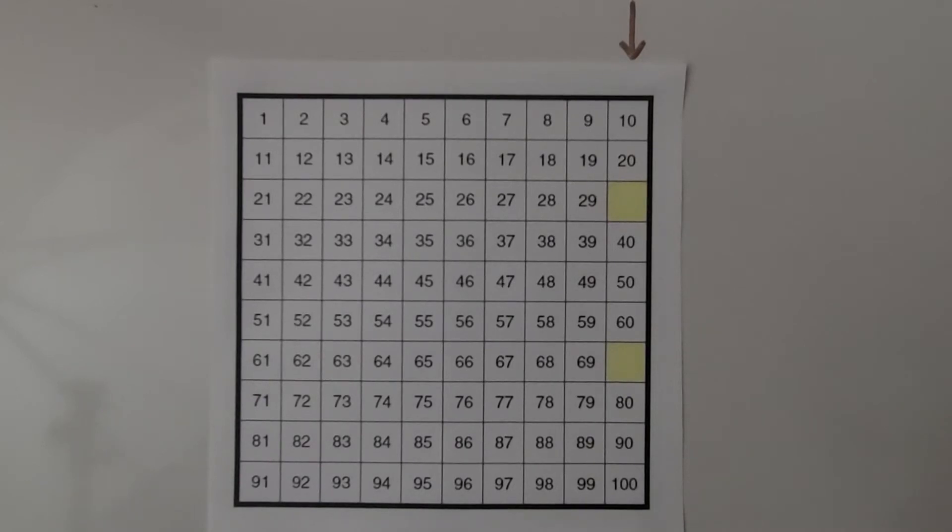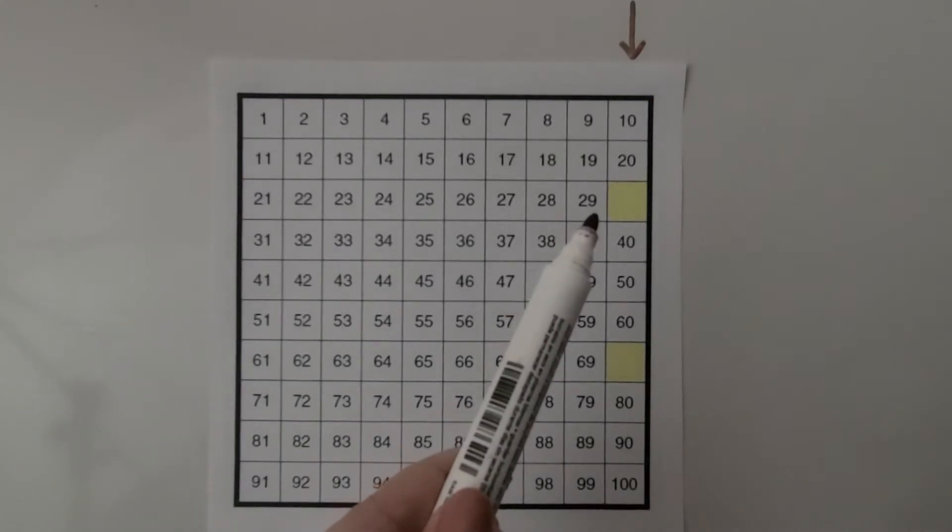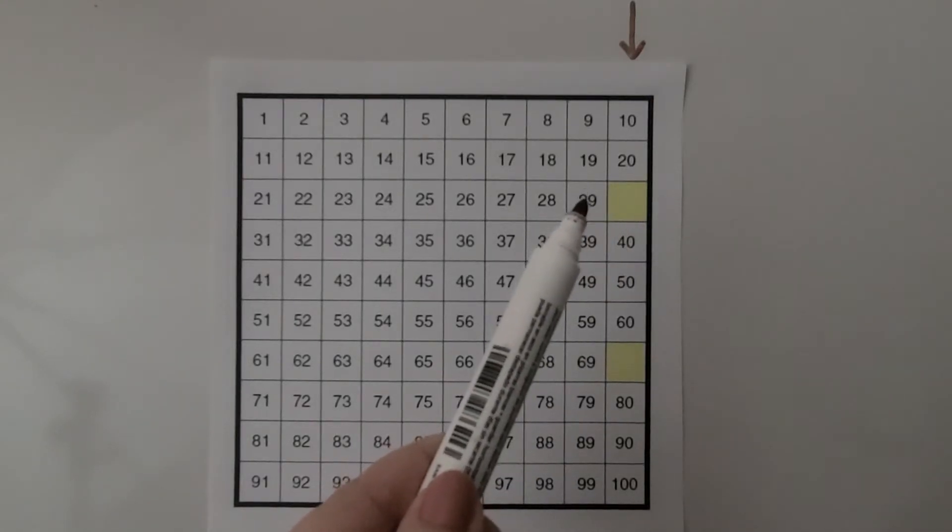Here we have another hundred chart, and we can see there are some numbers missing from this hundred chart. We can see there's a number missing here and here. And because the chart shows the numbers in counting order, we know the missing number comes after 29. It's the next number after 29.